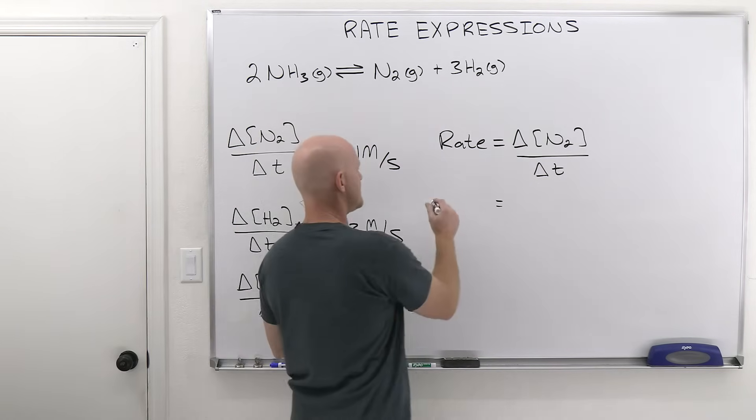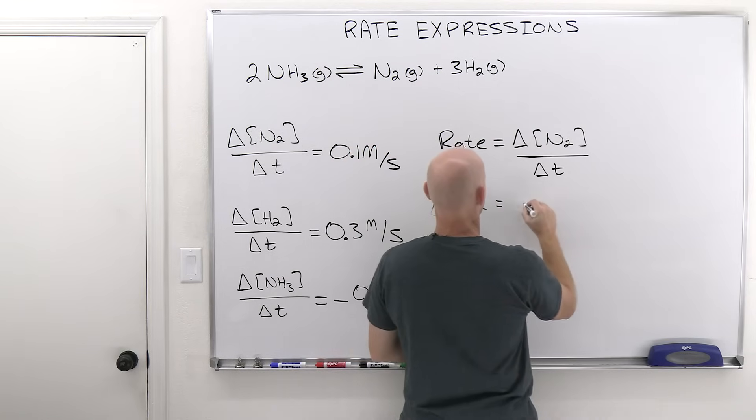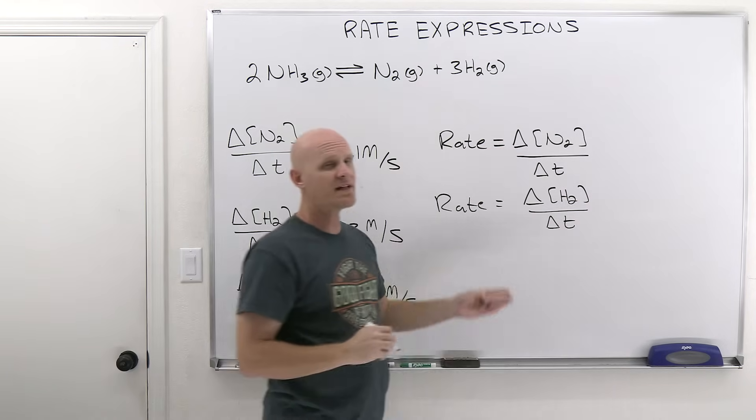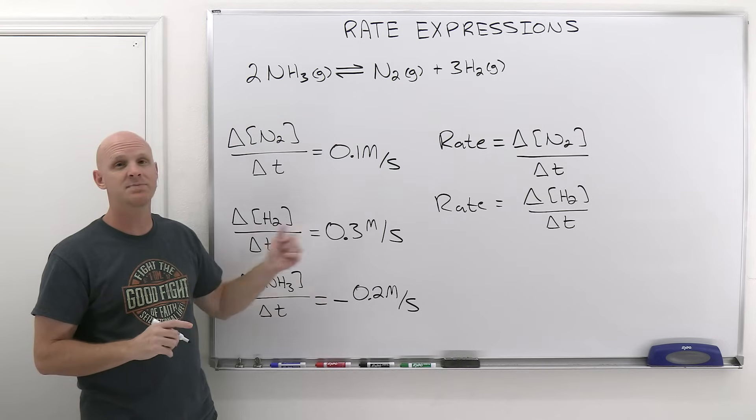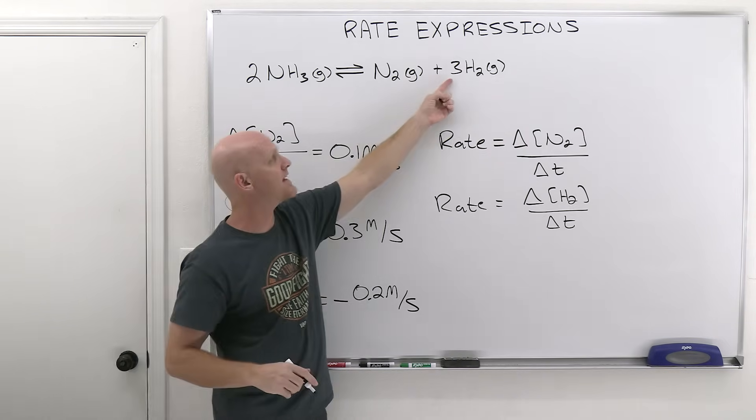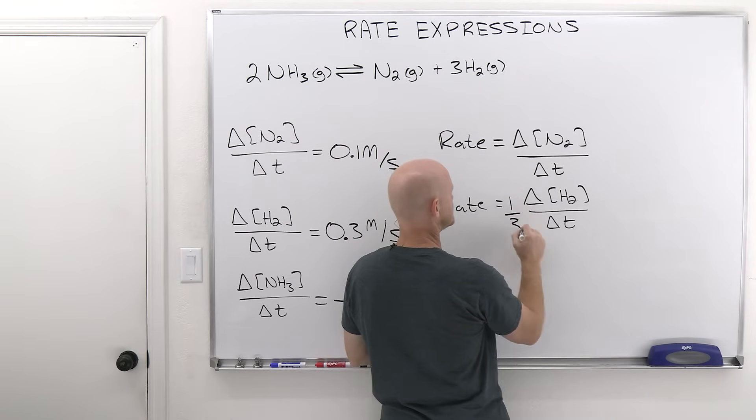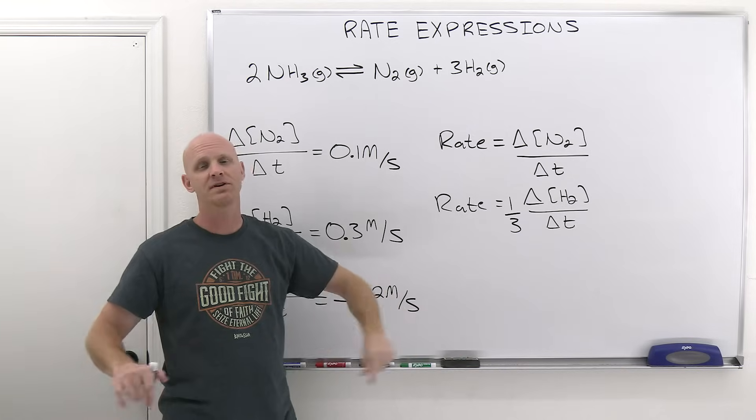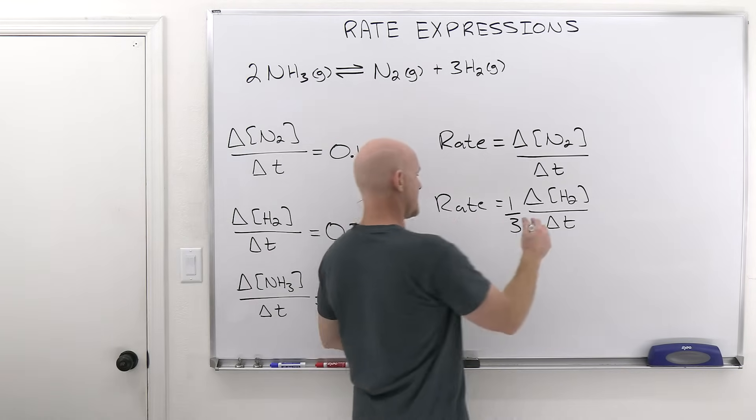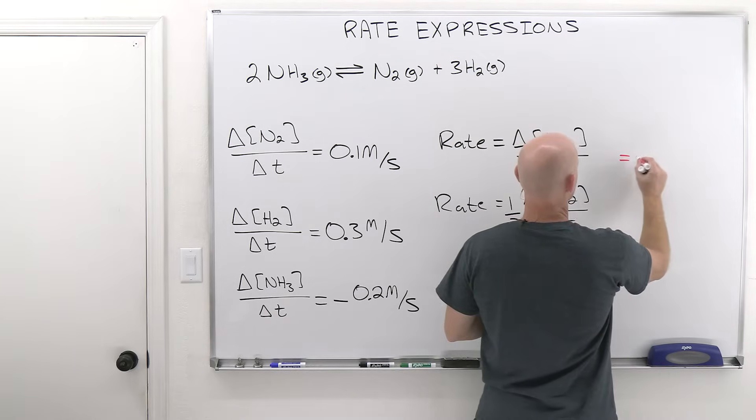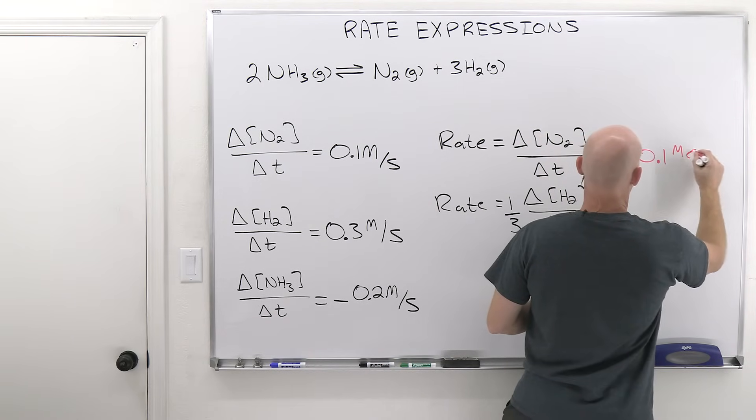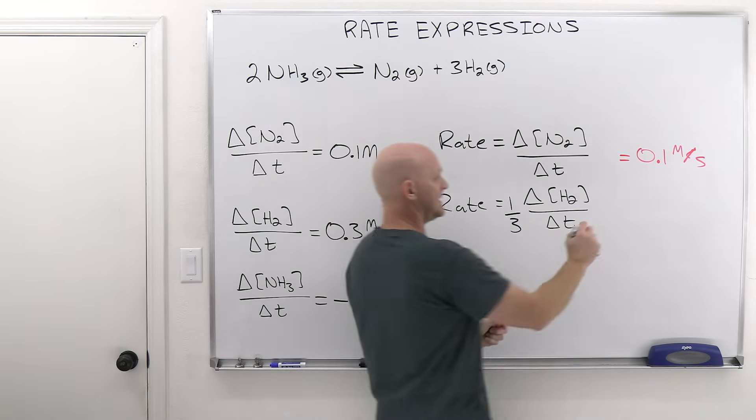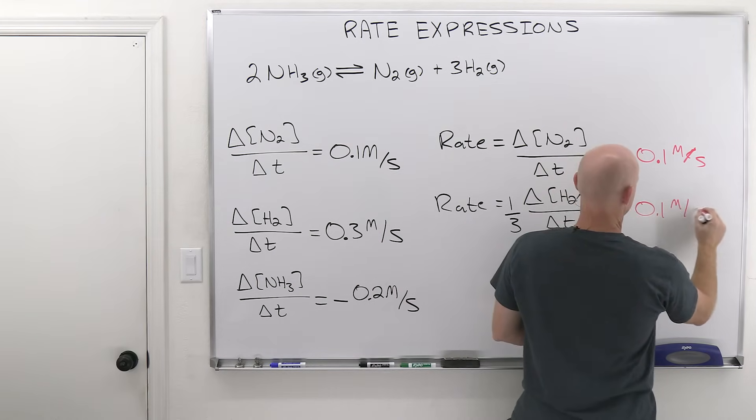Now, if we try to do the same thing for the change in H2 over the change in time, well, that's not going to be equal to the rate of reaction. It's three times bigger. So what you've got to do is you actually got to divide by that coefficient, which oftentimes we just write as a fraction instead. So we could have just put a three in the denominator here or just multiply by one-third, same difference either way. In this case, on the top example here, this would have come out to 0.1 molar per second.